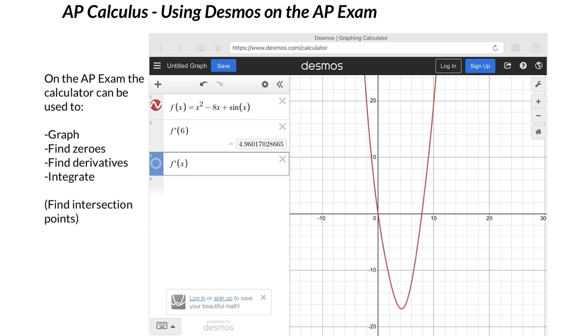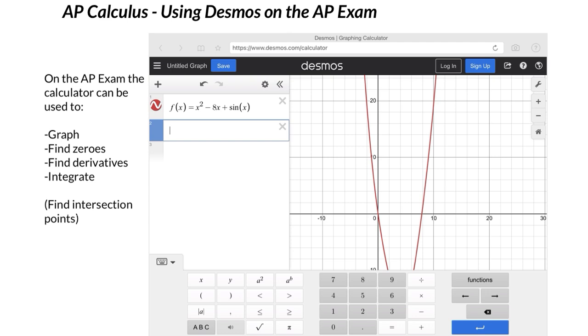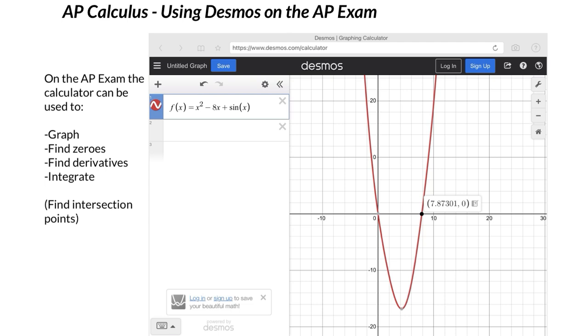If you only want to see one graph at a time, really easy to do that. If you want to just make something disappear, hit the x and get rid of stuff.